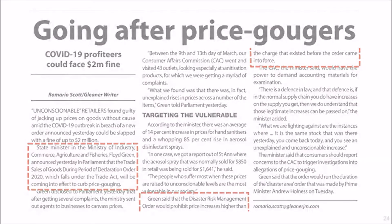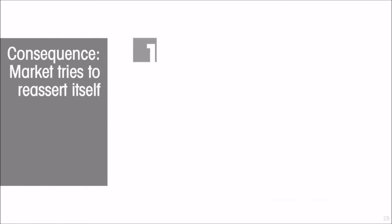What are the consequences of imposing a price ceiling? If there is inadequate enforcement by the government, you end up with simply a black market — a market where trades take place anyway but outside the gaze of the authorities. The market tries to reassert itself; market forces are like forces of nature. People respond to incentives, and one response to the regulation is for it to be ignored, to the extent that it can be. If enforcement is strong, the market reasserts itself in other ways.